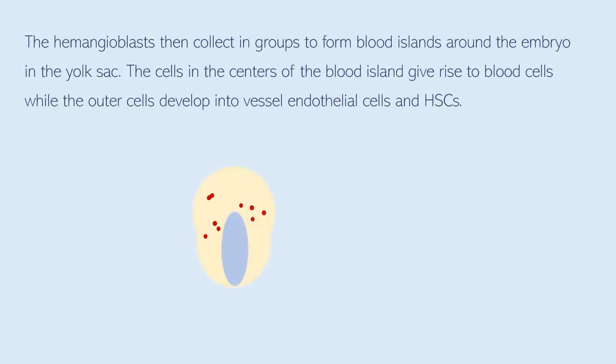The hemangioblasts then collect into groups to form blood islands around the embryo and the yolk sac. The cells in the centers of the blood islands give rise to blood cells, while the outer cells develop into vessel endothelial cells and HSCs.